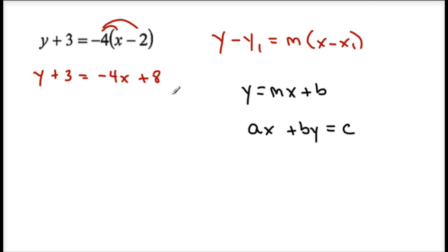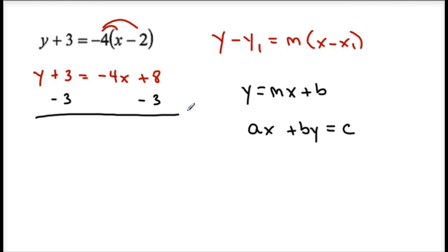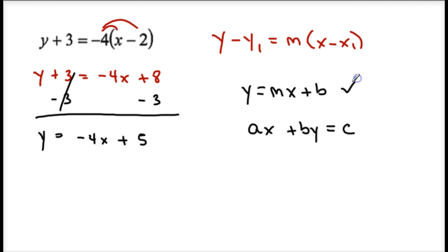So the first thing I did was distribute. Now solving for y — I want to get y on one side all by itself. There's a positive 3 here, so I want to bring this positive 3 to the right side and subtract. So y equals negative 4x plus 5. Now I'm in slope intercept form.